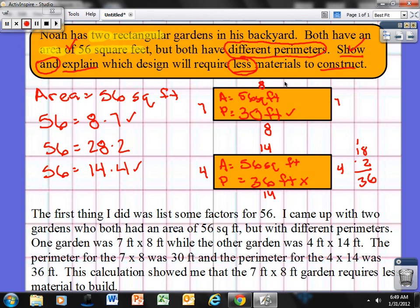I go 7 and 8. OK, so if these two sides are 7 and 8, the corresponding sides are also congruent. So I know that if the top's 8, the bottom's 8 because it's rectangular. The left's 7, the right's 7. I know 8 plus 7 is 15. I doubled that because this side is also 8 and 7. That gives me 30 feet. It gives me an area of 56 square feet, which is required, and it gives me a perimeter of 30 feet.